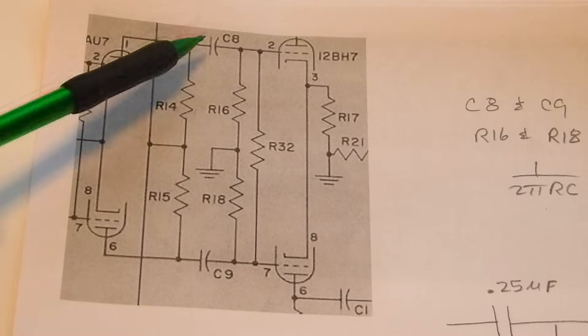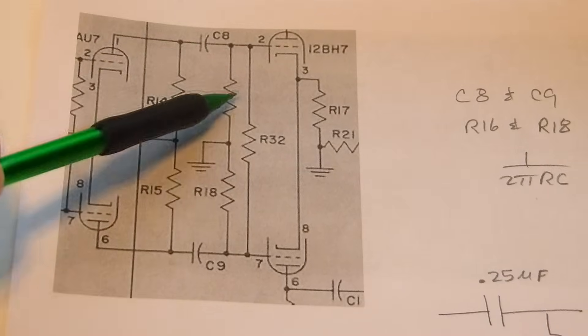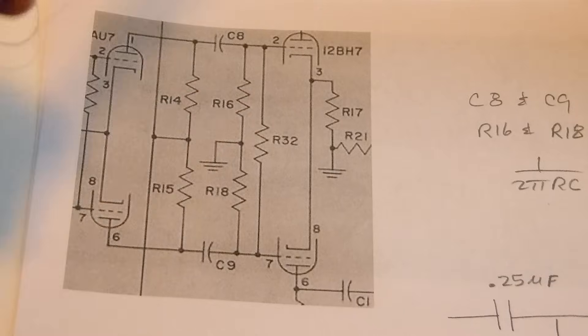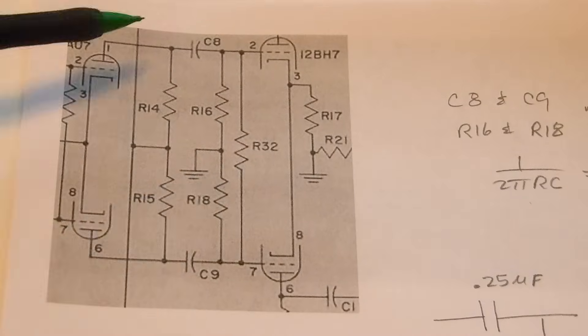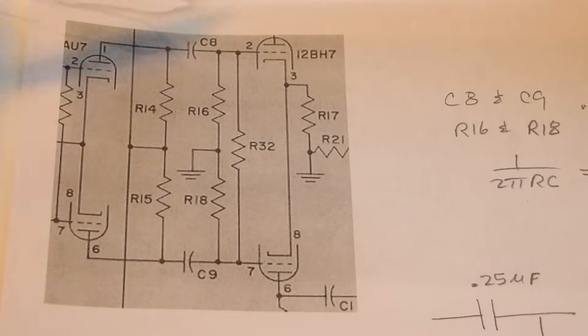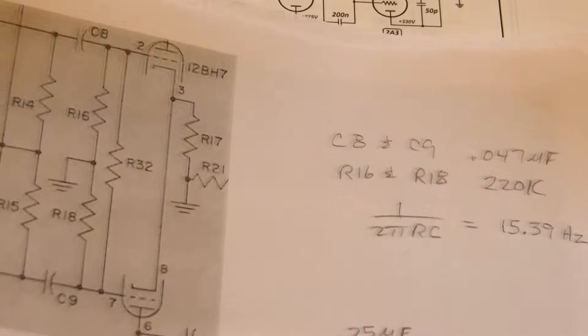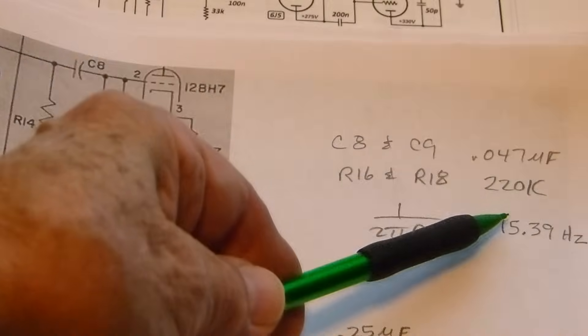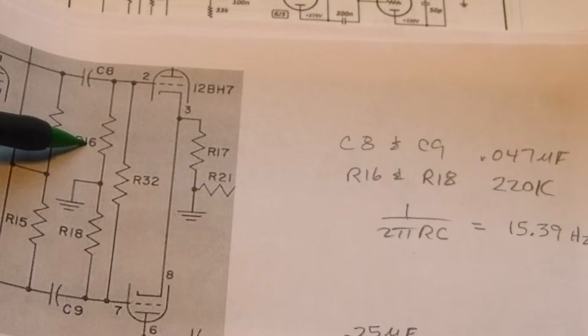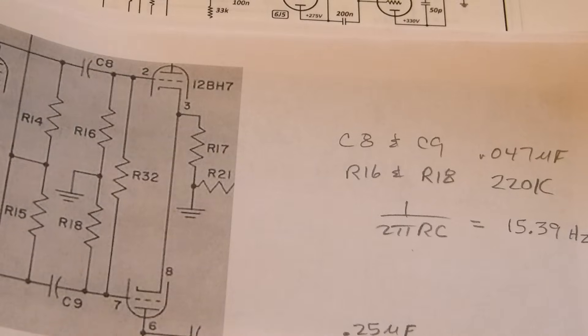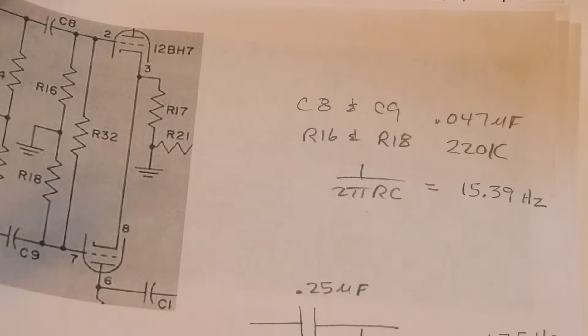I just printed a little bit of the schematic, the only part we're interested in - the value of this capacitor and this resistor, which is exactly the same as this capacitor and this resistor. These are 0.047 microfarads.